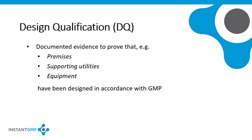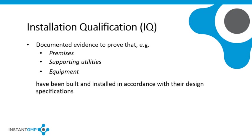A Design Qualification (DQ) documents evidence that premises, supporting utilities such as water systems, air handling systems, gas supply, compressed air, and equipment have been designed in accordance with GMP and meet their user requirement design specifications. An Installation Qualification (IQ) documents evidence that premises, supporting utilities such as water systems, air handling systems, gas supply, compressed air, and equipment have been built and installed in accordance with GMP and meet their specifications.